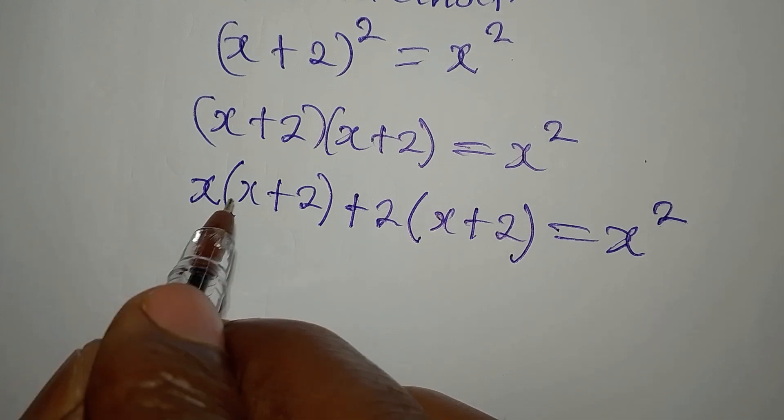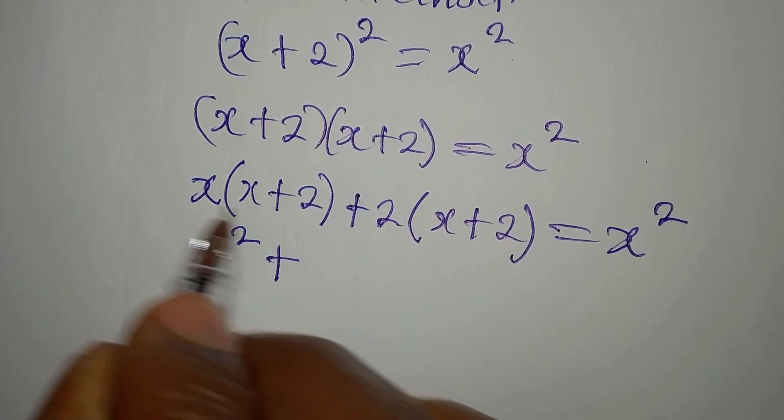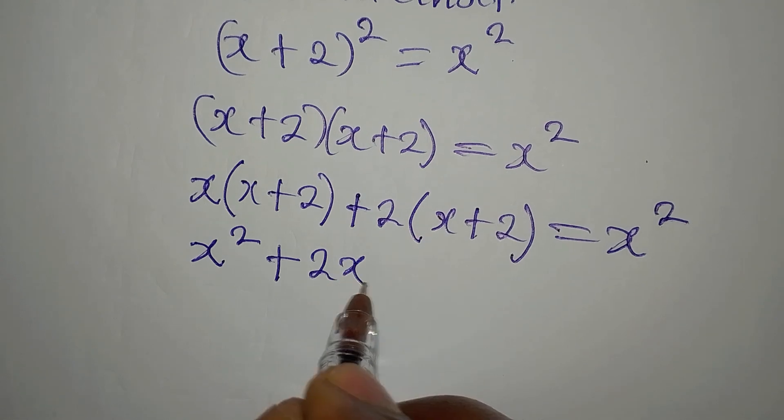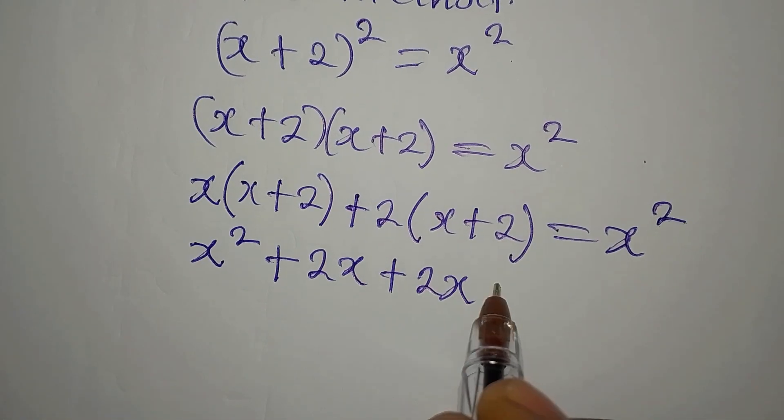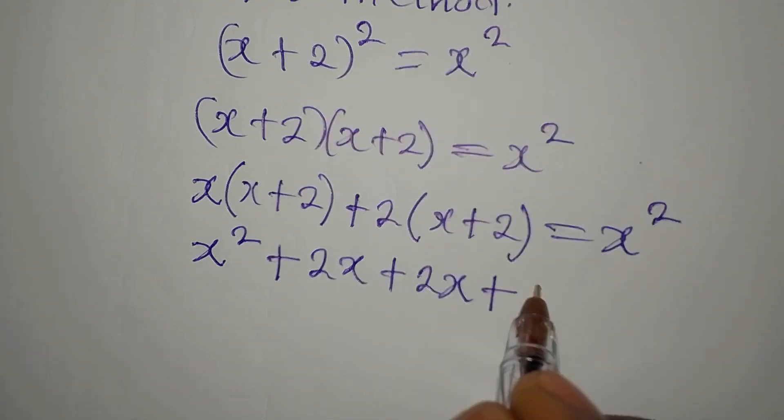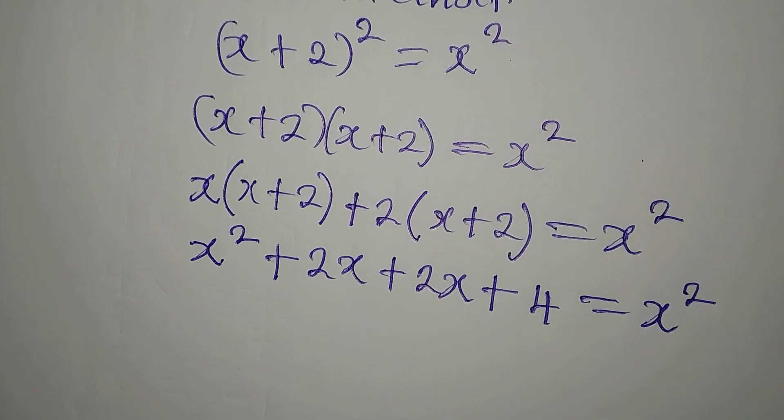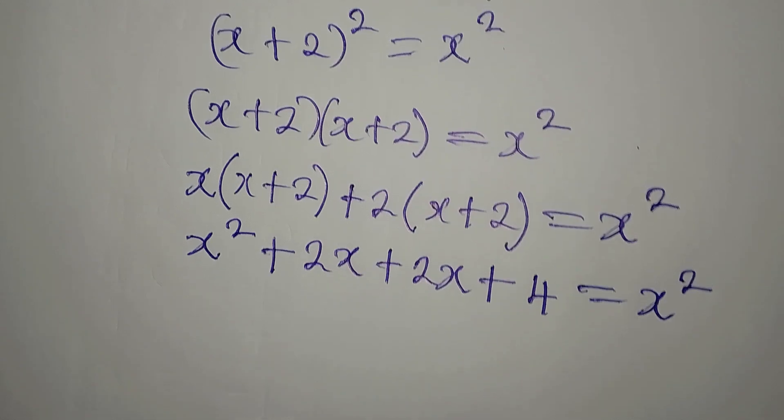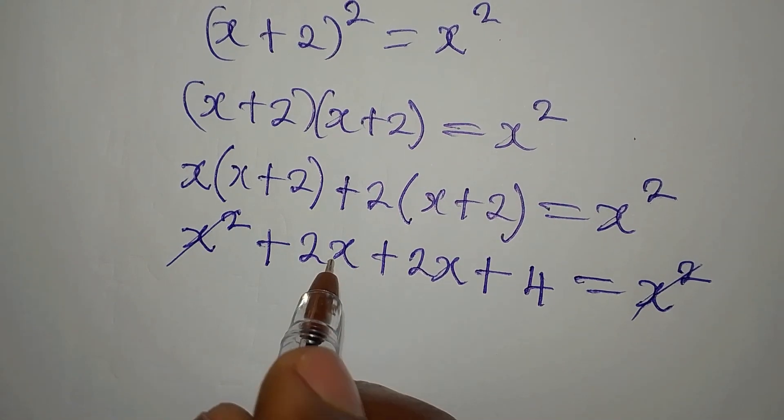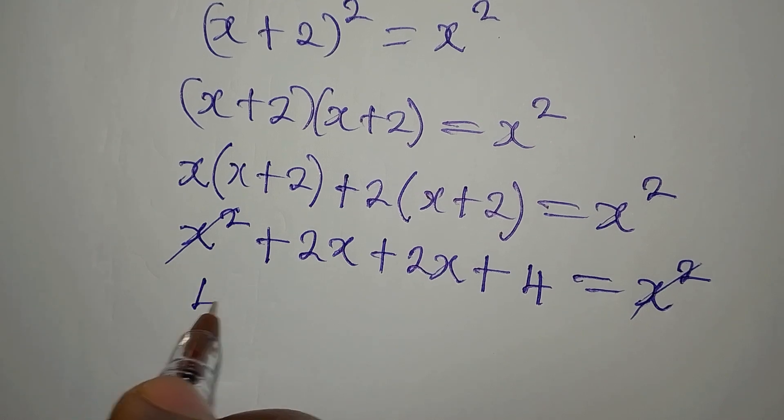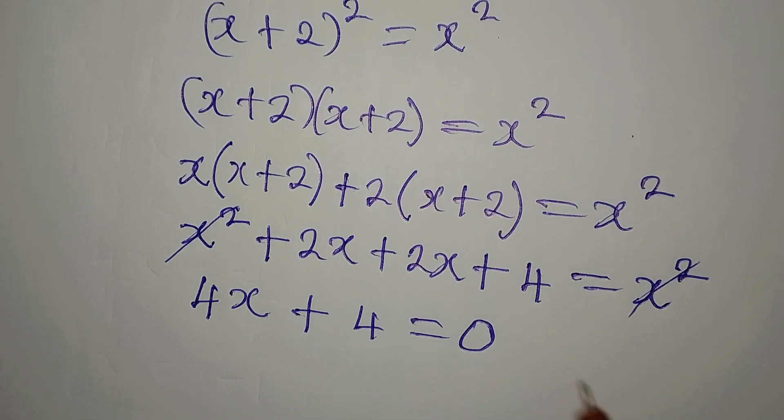We have x times x which will give us x squared plus x times 2 that is 2x plus 2 times x that is 2x then plus 2 times 2 and it is 4. The whole of this is equal to x squared. Mind you, this and this can cancel so that 2x plus 2x will give us 4x then plus 4. This is equal to 0.